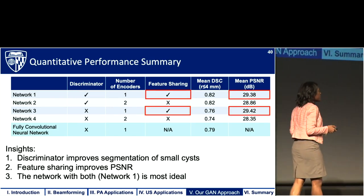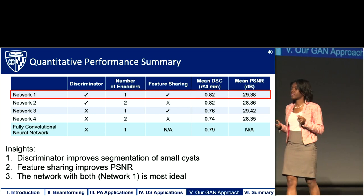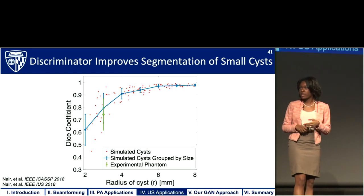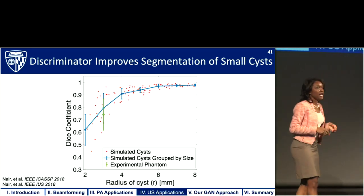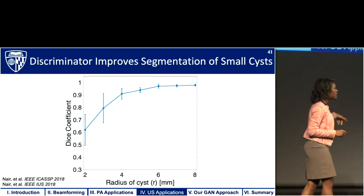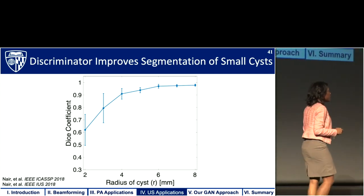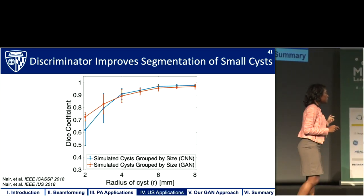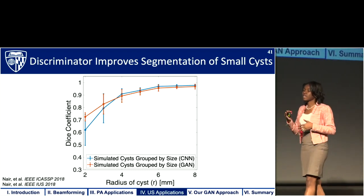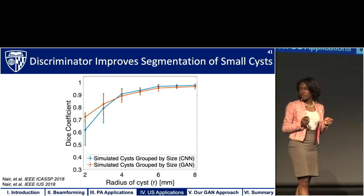Feature sharing improves our PSNR, which leads us to conclude that the network with both the discriminator and feature sharing is most ideal. Returning to the Dice similarity coefficient plot comparing our previous result to the result with our GAN approach, we see that we achieved our goal of slightly increasing the Dice similarity coefficient for the smaller cysts — so we consider that a success.